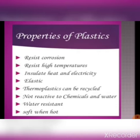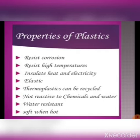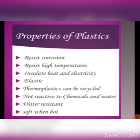Plastic is water resistant and soft when it is hot. Due to this reason, plastics are a choice of material in our daily life. To summarize, the different properties of plastics are: resistant to corrosion, resistant to high temperature, insulator for heat and electricity, elastic in nature, thermoplastics can be recycled, non-reactive to chemicals and water, water resistant, soft when hot, and light, strong and durable.